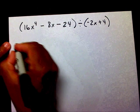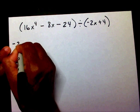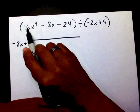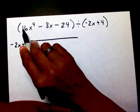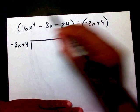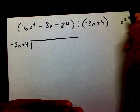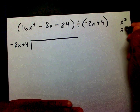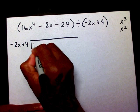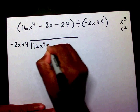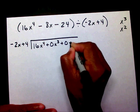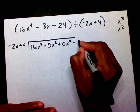So I have negative 2x plus 4. Let's look at this number here. I have x to the fourth — I'm missing an x to the third and I'm missing an x to the second. I have my x and I have my constant. So I'm going to write 16x to the fourth plus 0x to the third plus 0x squared minus 8x minus 24.